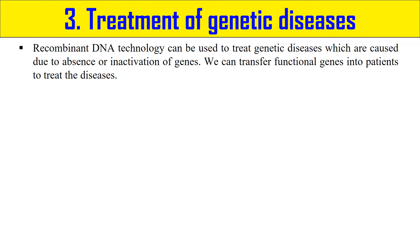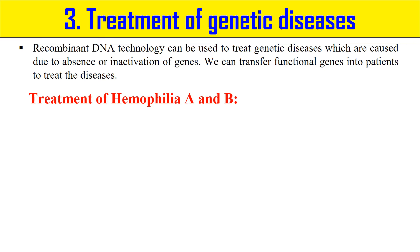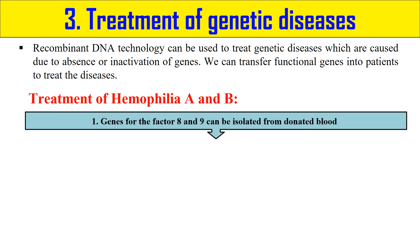The third application is the treatment of genetic disease — gene therapy. Genetic diseases arise from the deficiency or inactivation of certain genes involved in particular metabolic processes. By using gene therapy we can treat these diseases. For example, hemophilia A and B is a disorder in which blood does not clot, due to the absence of clotting factors 8 and 9. In a hemophilia patient, the genes for factors 8 and 9 are not working.